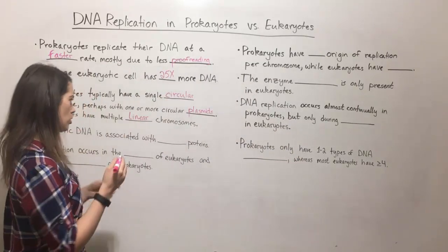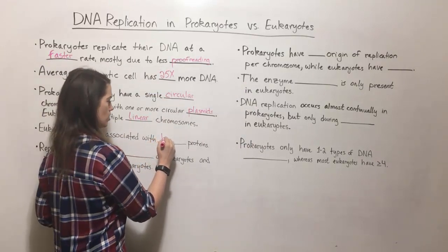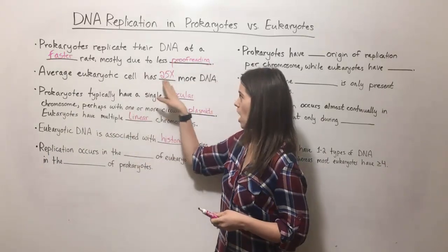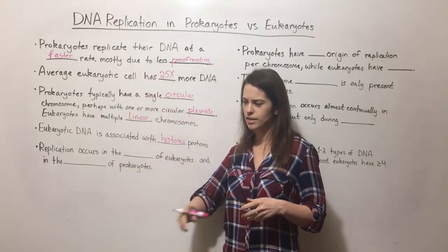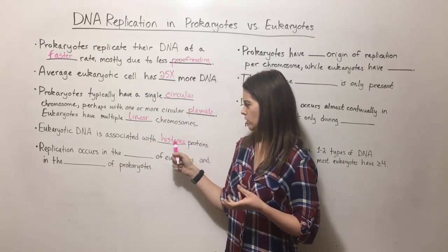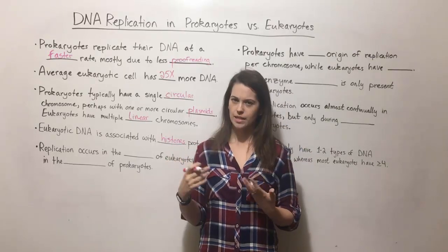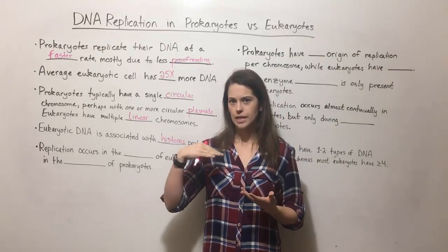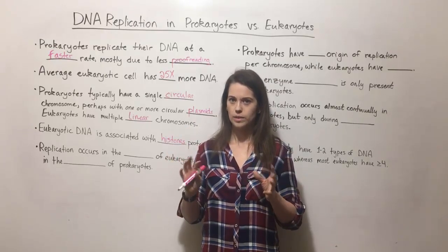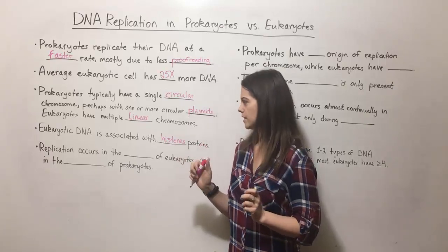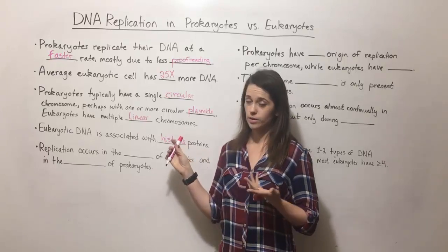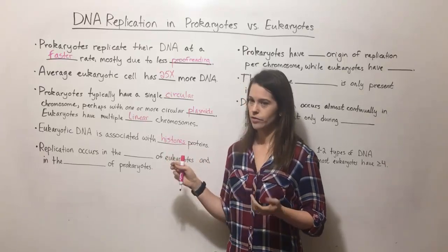Eukaryotic DNA is also associated with proteins known as histones. Eukaryotes have a lot more DNA in their cell and it's packaged away into the nucleus, where it's associated with these histone proteins that help to organize it. The DNA gets wrapped around these histones in a highly organized fashion that helps the cell keep track of all its DNA. Prokaryotes, on the other hand, do not have those histone proteins.